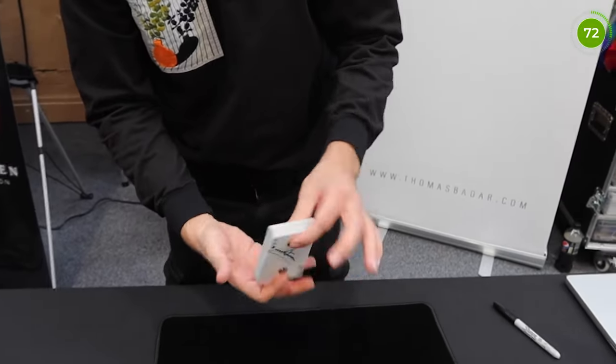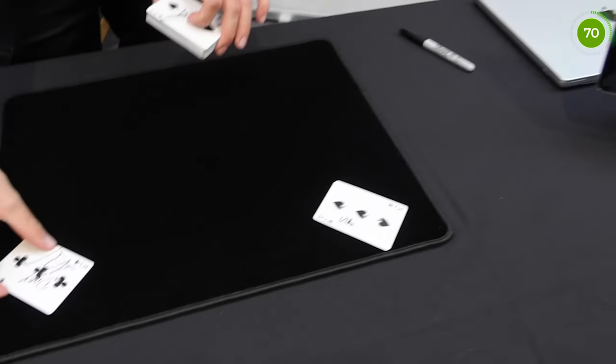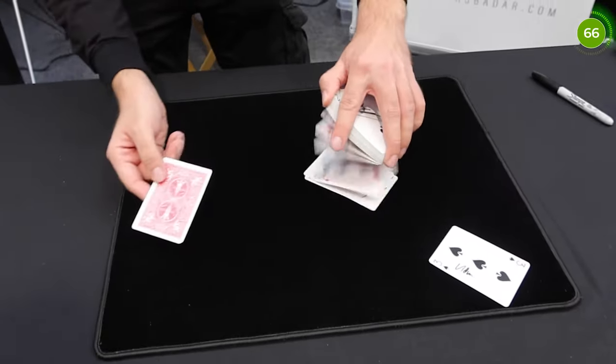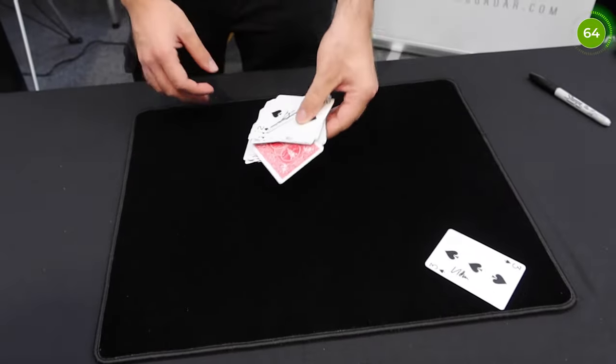So your card is somewhere in the deck. And here is the first three. We hold it face down and we just throw it back to the deck somewhere random.